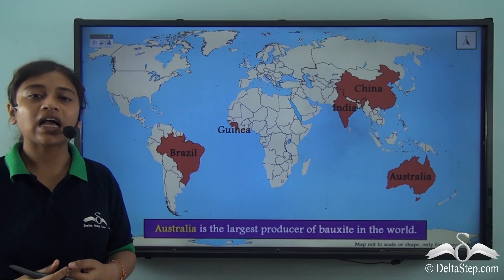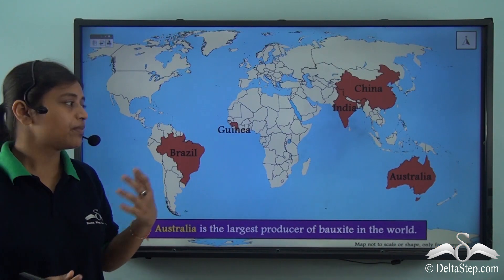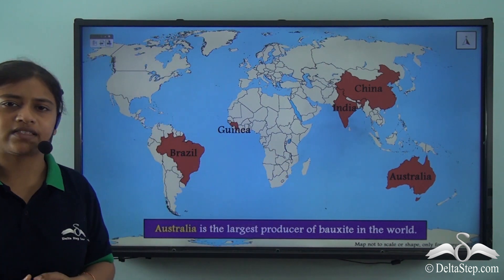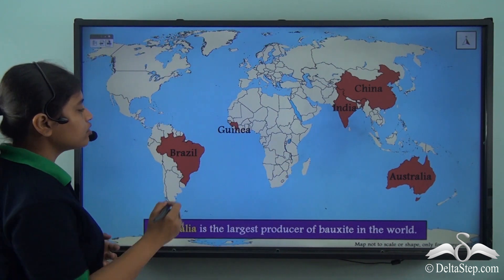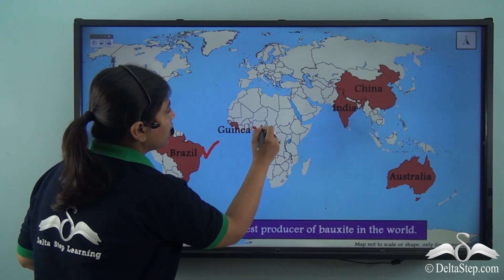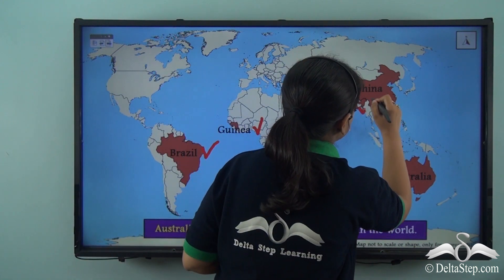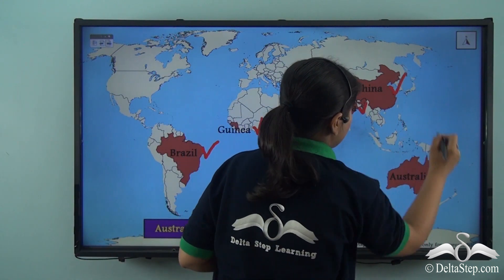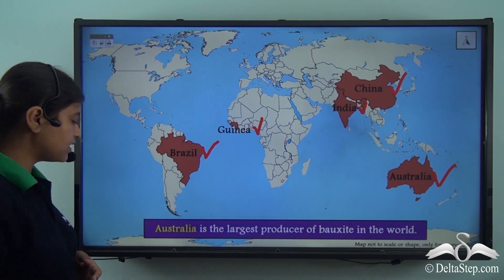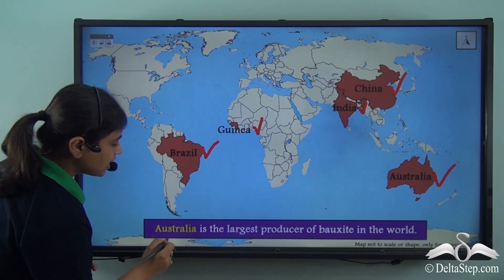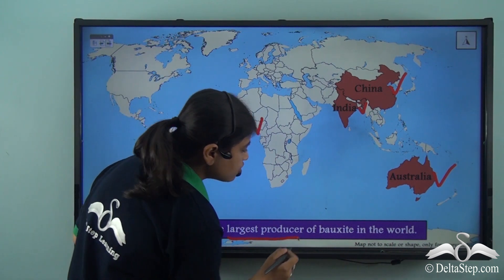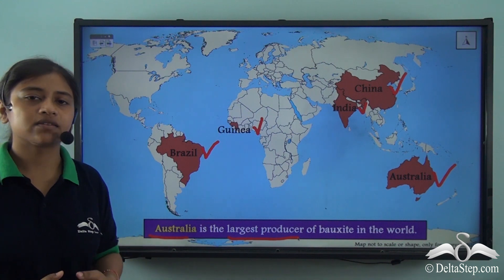If we take a look at the world map, the leading producers of Bauxite include Brazil, Guinea, India, China and Australia. Out of all these, Australia is the largest producer of Bauxite in the world.